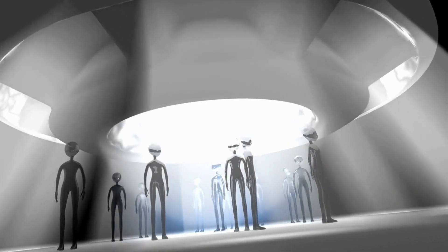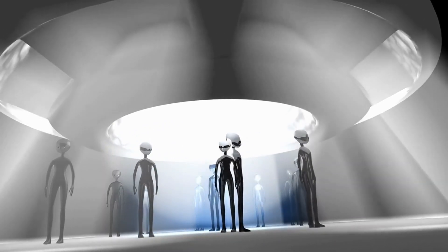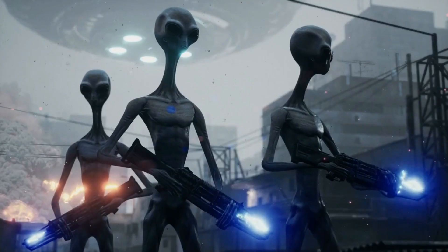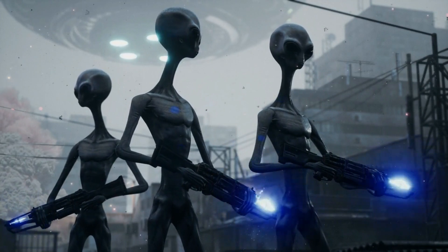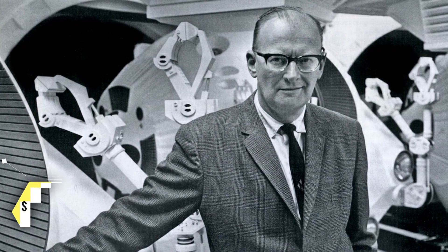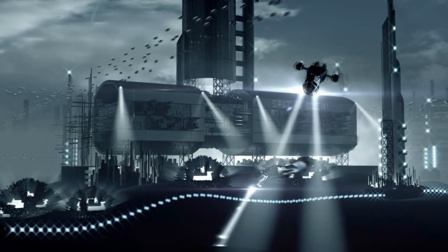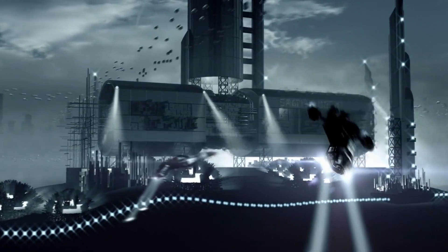The Fermi Paradox refers to the dichotomy between the high probability that extraterrestrial intelligence exists and the fact that we have no evidence for such aliens. This paradox was described by the late British science fiction author Sir Arthur C. Clarke, who said: Two possibilities exist. Either we are alone in the universe, or we are not. Both are equally terrifying.